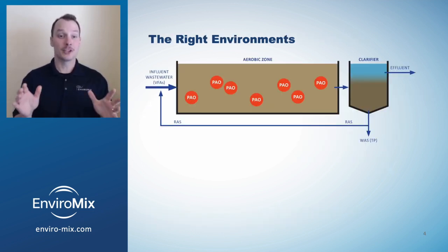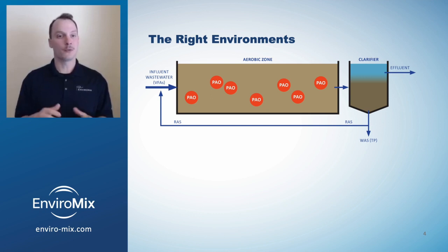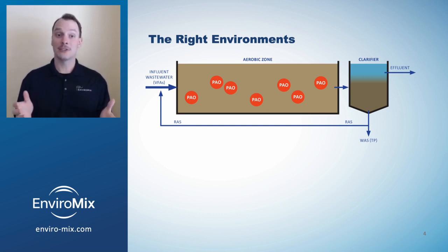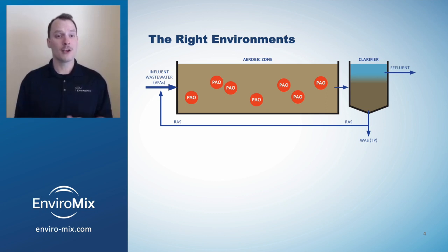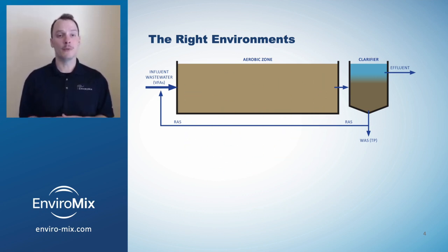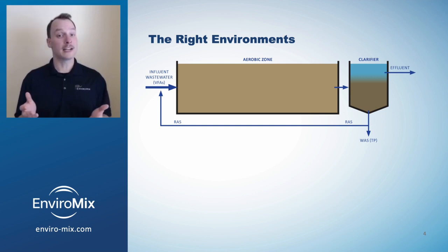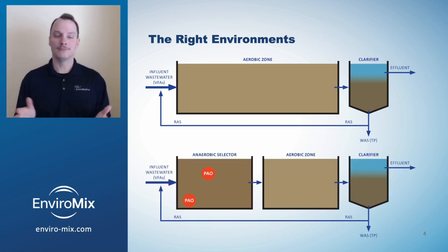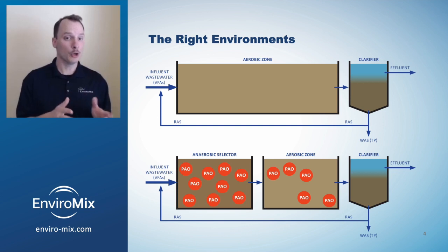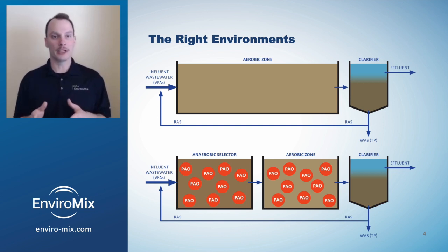Activated sludge is a community of microbes that are all vying to thrive in a competitive environment. In activated sludge processes with aerobic and anoxic environments, PAOs are unable to compete with other microbes to access the food. However, when the activated sludge is exposed to alternating anaerobic and aerobic environments, the PAOs are selected and able to flourish.